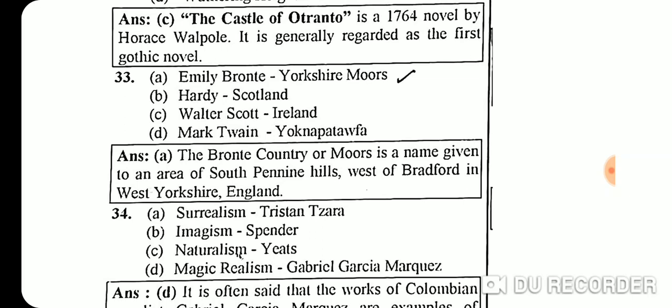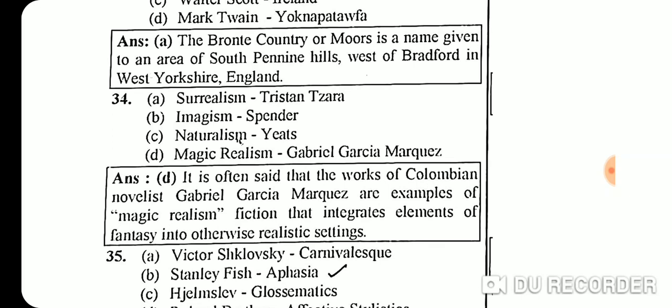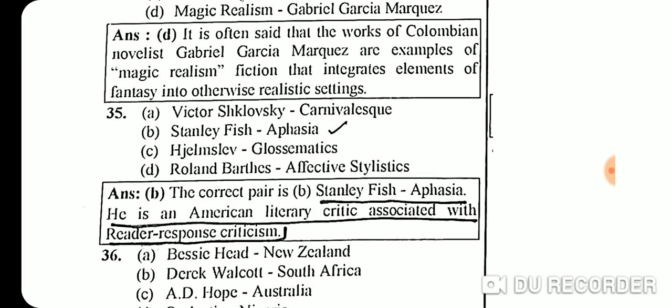Question 34: The correct option is magic realism, associated with Gabriel García Márquez. It is often said that the works of Colombian novelist Gabriel García Márquez are examples of magic realism — fiction that integrates elements of fantasy into otherwise realistic settings.